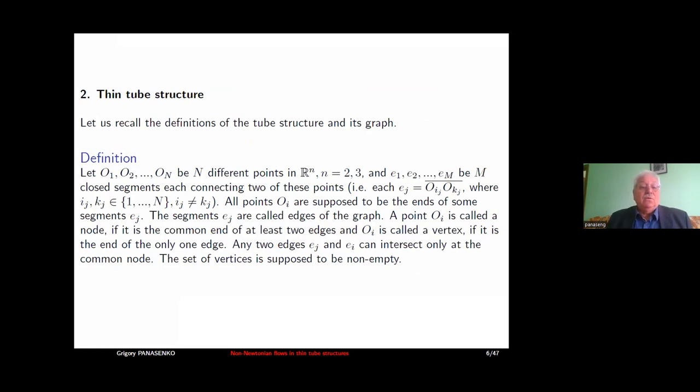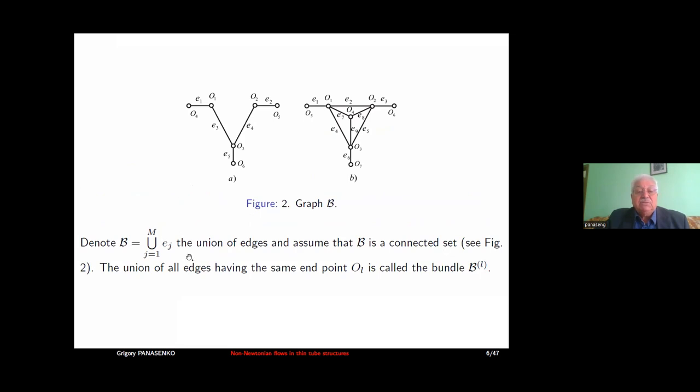Now I pass to the rigorous definition of thin tube structures. Maybe you saw these definitions in my previous talks. We introduce first n different points in R^n, and we consider two or three, and m closed segments e_1, e_2, and so on. All points o_i are supposed to be the ends of some of these segments. These segments are called edges of the graph, and these points are called either nodes if they are endpoints for at least two edges, or vertices if there is only one edge which has this endpoint. The edges can intersect only in these points, endpoints o_i.